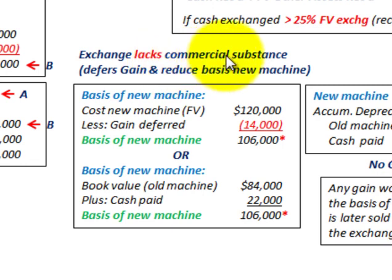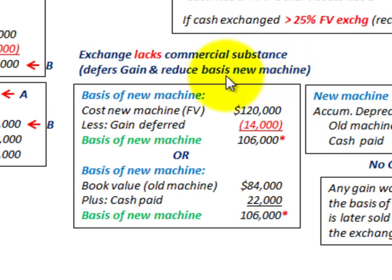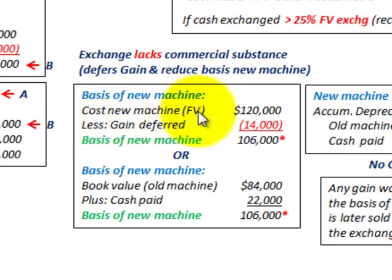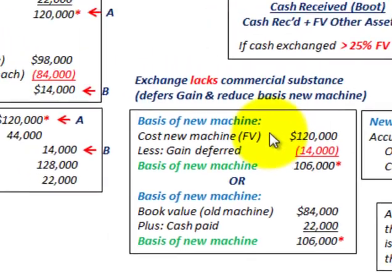Now let's look at the case where the exchange lacks commercial substance — there are no future cash flows on this exchange. This is where we defer the gain and reduce the basis of the new machine. For the basis of the new machine, we can do it one of two ways. The first way: the cost of the new machine is its fair value of $120,000 — that's what we calculated when the exchange had commercial substance.